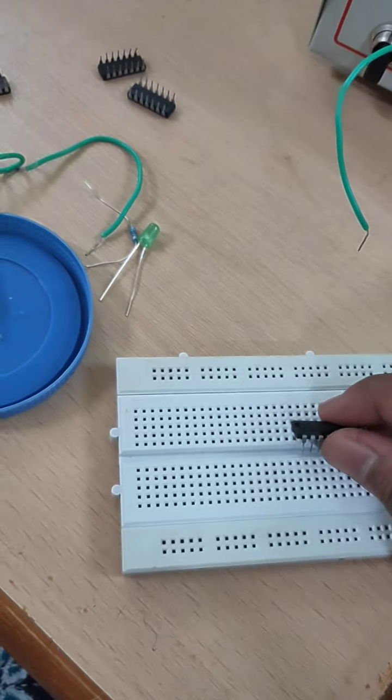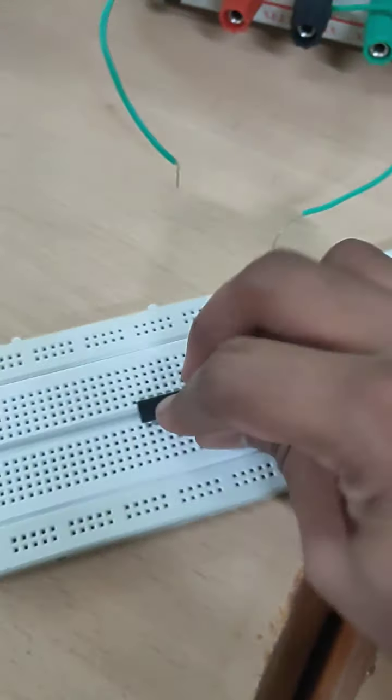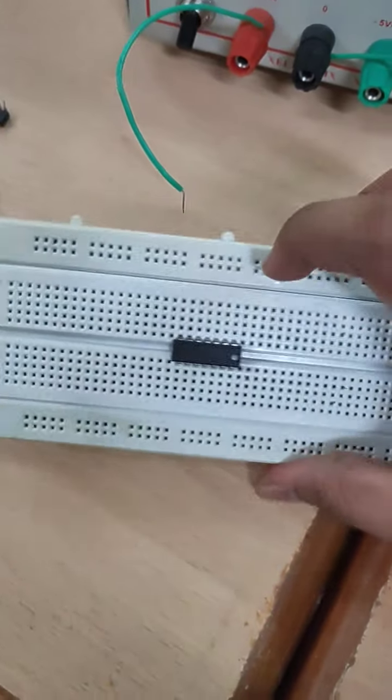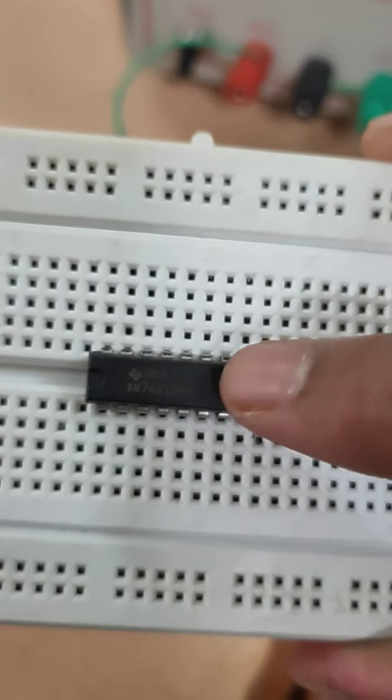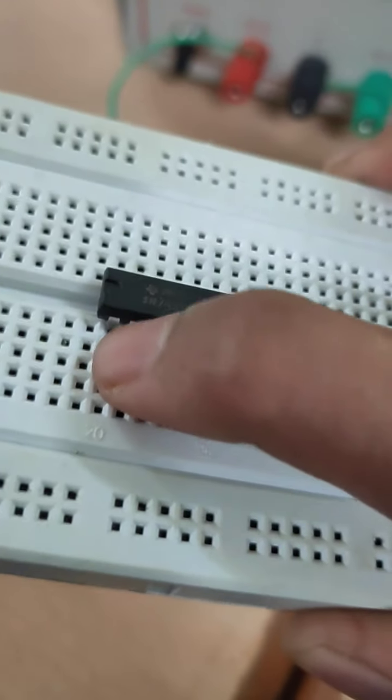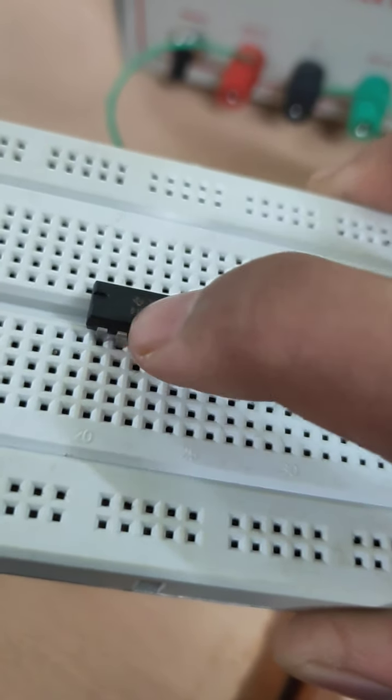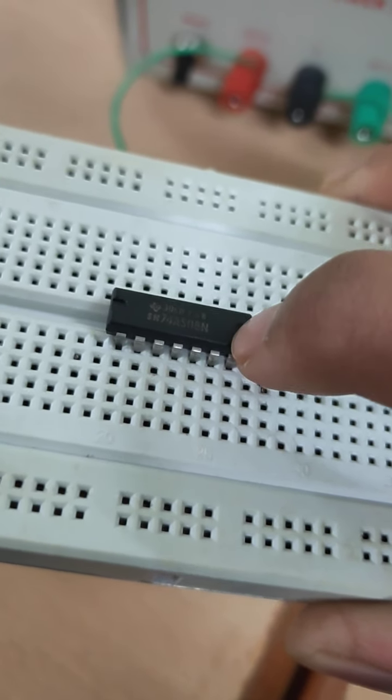This is your IC, I am placing the IC like this. Notch like a structure is there. Here, this point is pin number 1, 2, 3, 4, 5, 6, 7th.